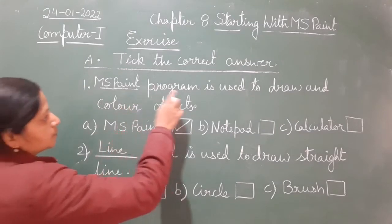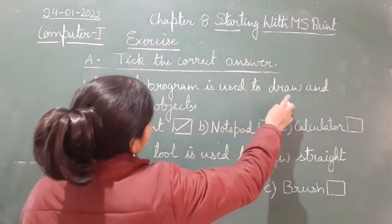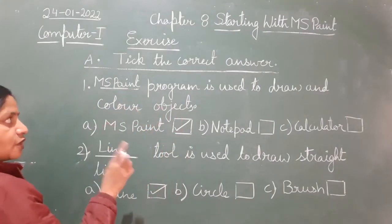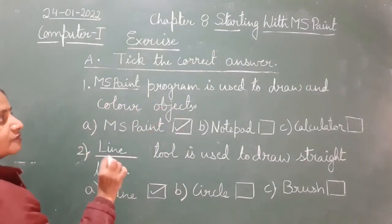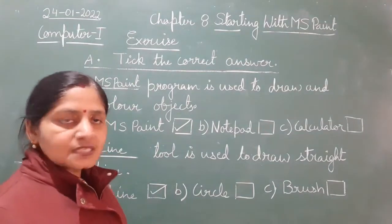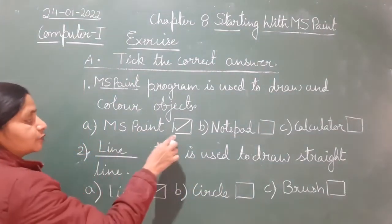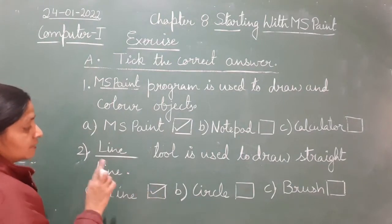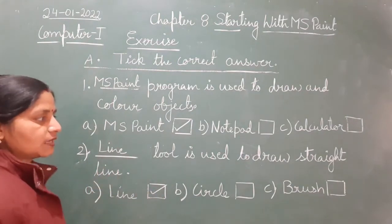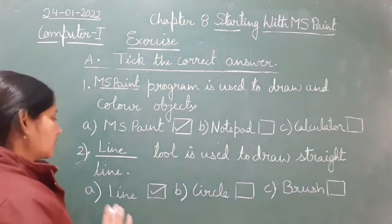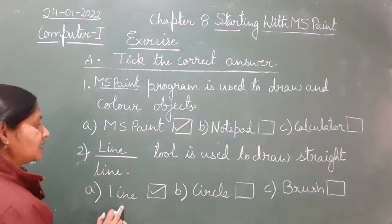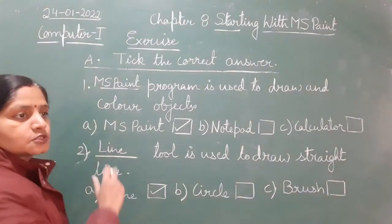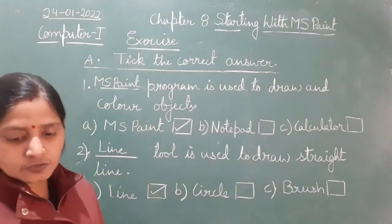MS Paint is a program used to draw and color objects. We have put a tick in front of MS Paint. Then for the line tool — line tool is used to draw a straight line, so we have put a tick in front of line and written line tool. This is all for the first and second questions.